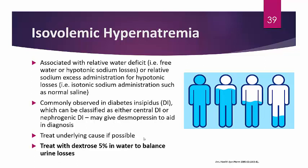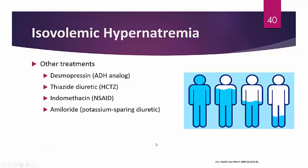DI is not very common — just be aware it is a cause of isovolemic hypernatremia. Treat the underlying cause if possible. Since this is an isovolemic problem with hypotonic urine losses, correct with D5W to replace free water losses. Other treatment options include desmopressin, thiazide diuretics such as HCTZ, indomethacin (a specific NSAID), or amiloride (a potassium-sparing diuretic).